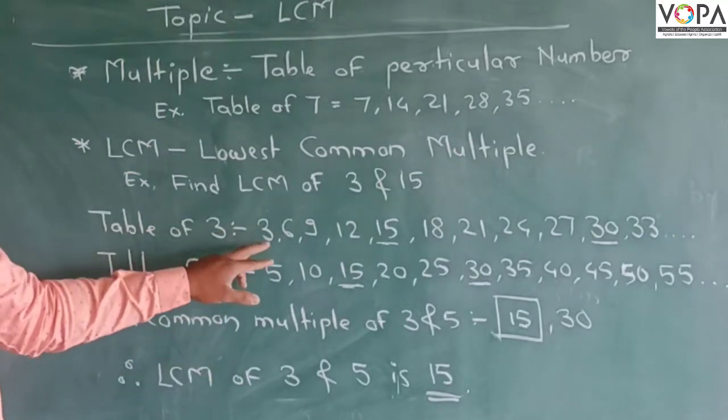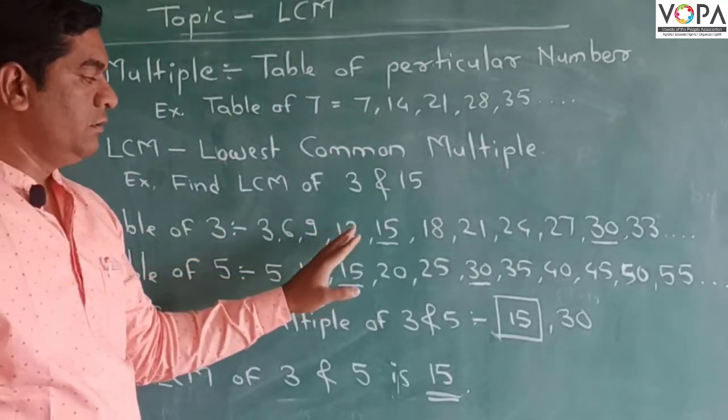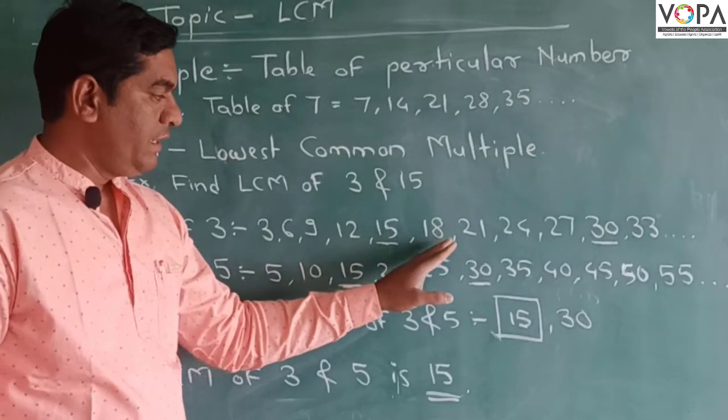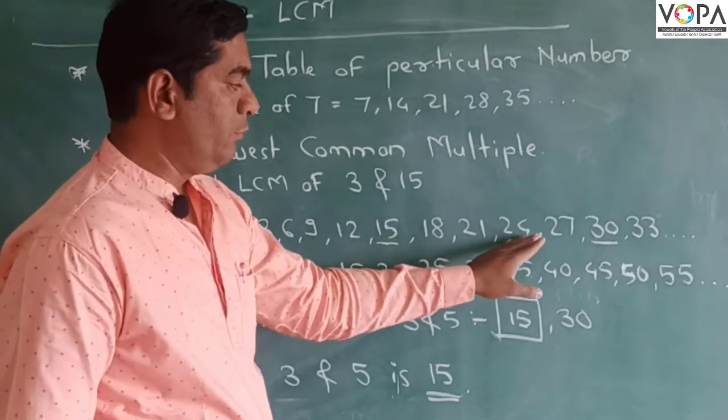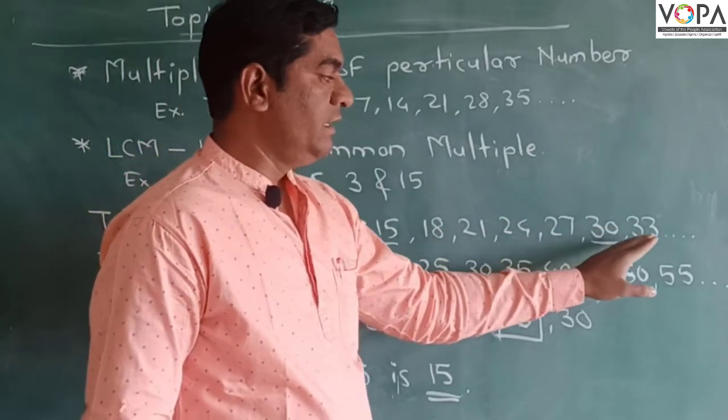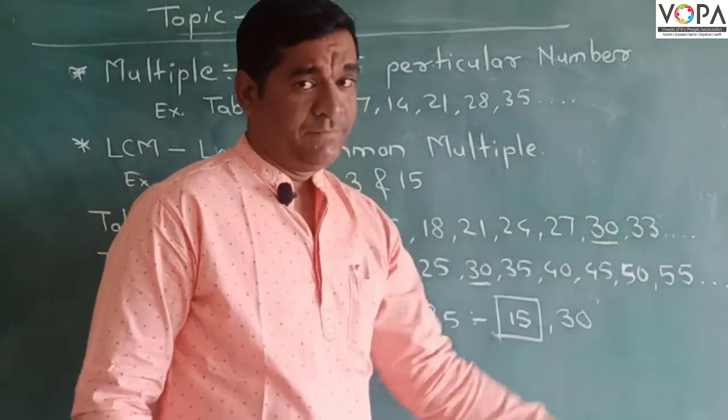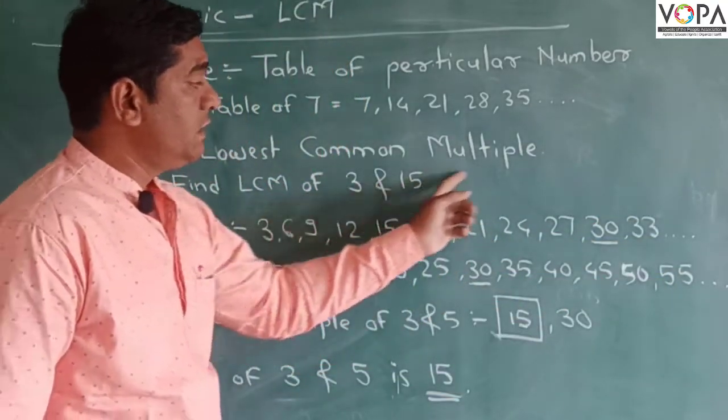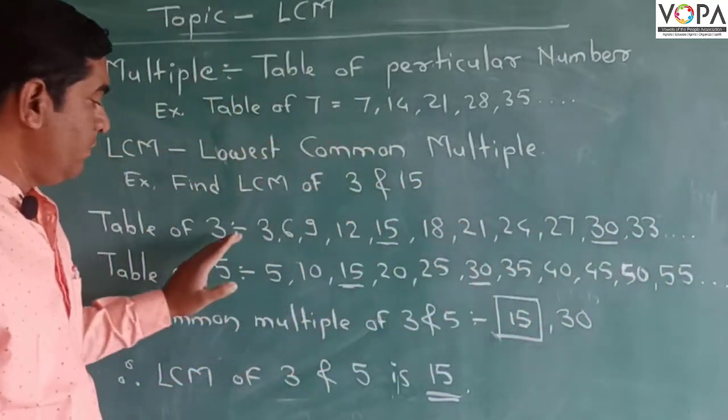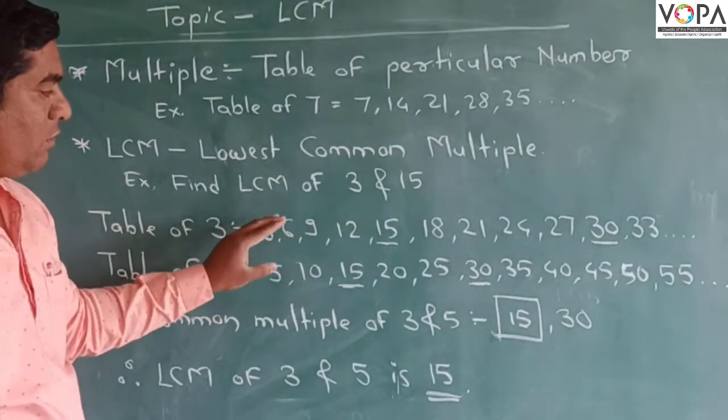So here, the table of 3. So 3, 6, 9, 12, 15, 18, 21, 24, 27, 30, 33 and so on. It is all called as a multiple of 3, and in short it is called the table of 3 also, because these all numbers are divided by 3.